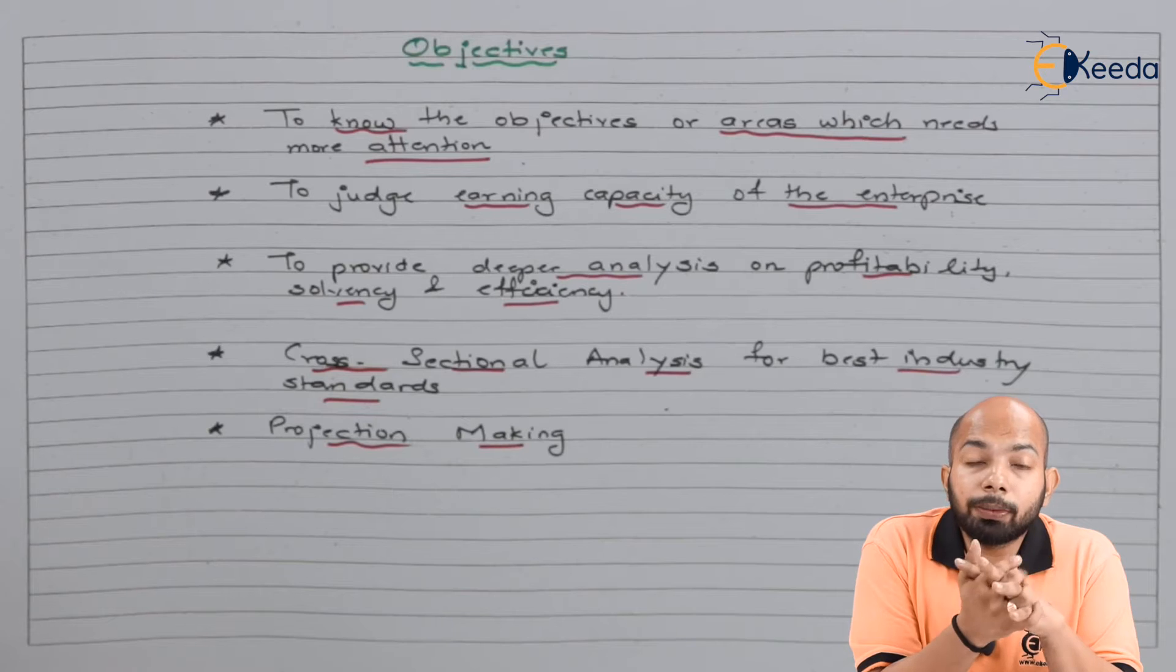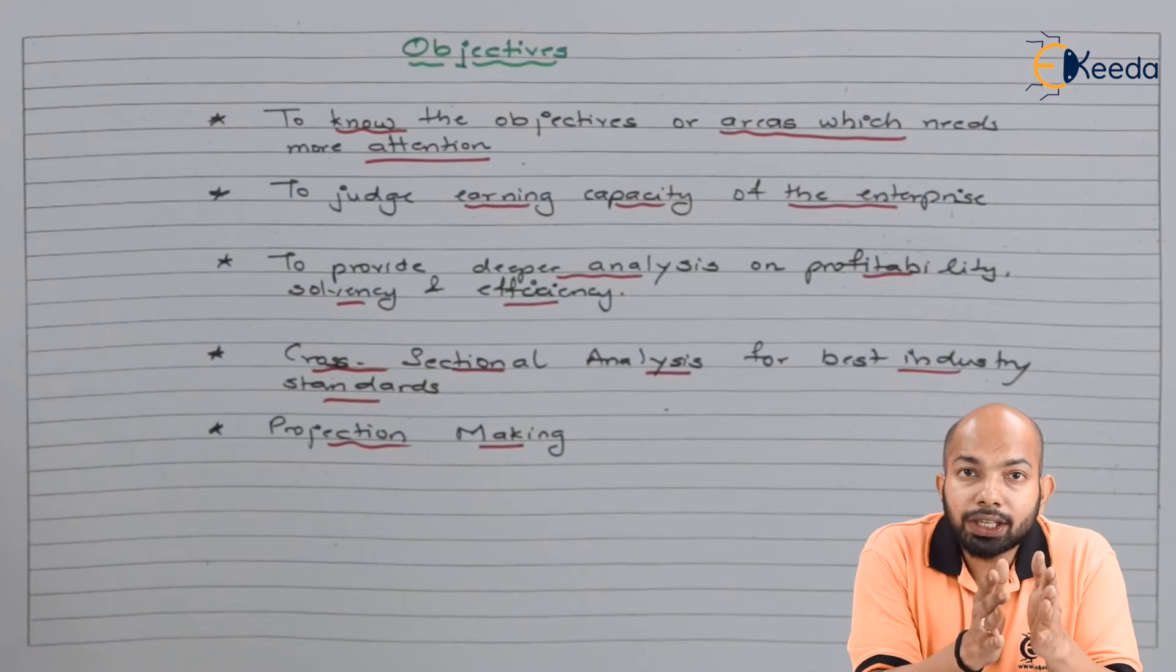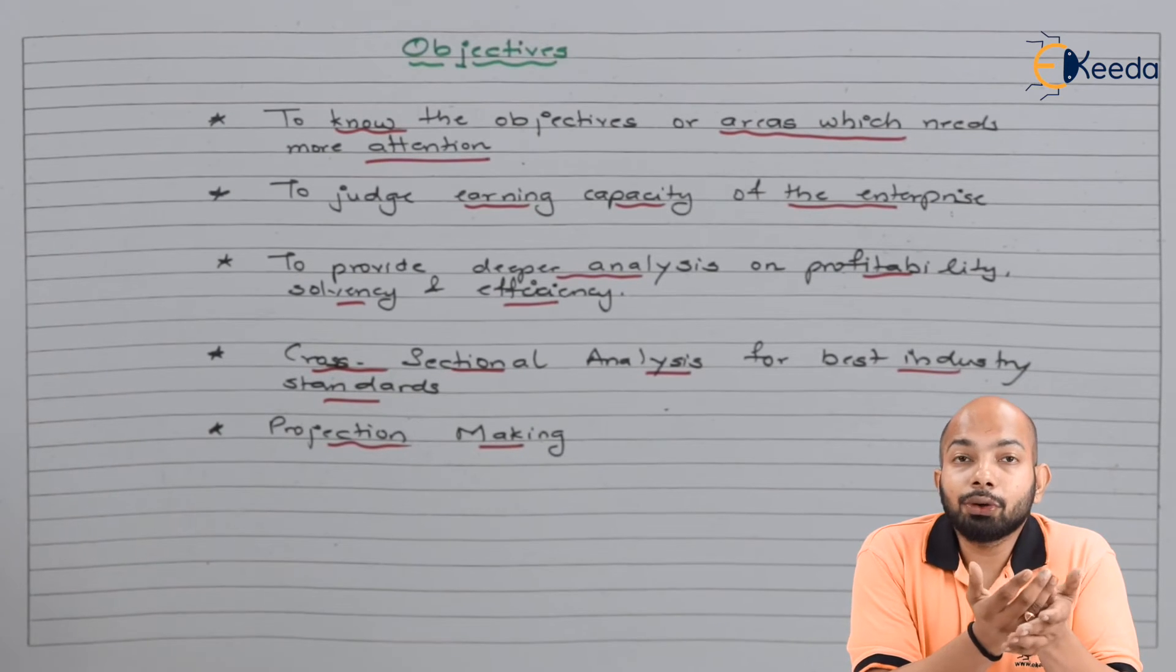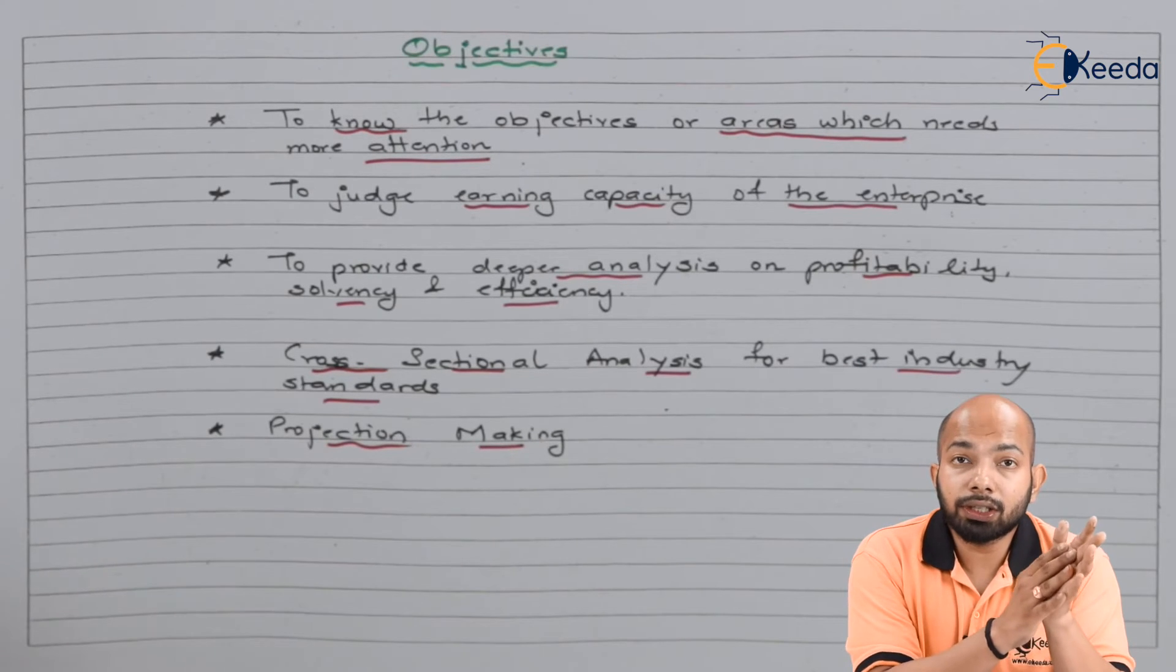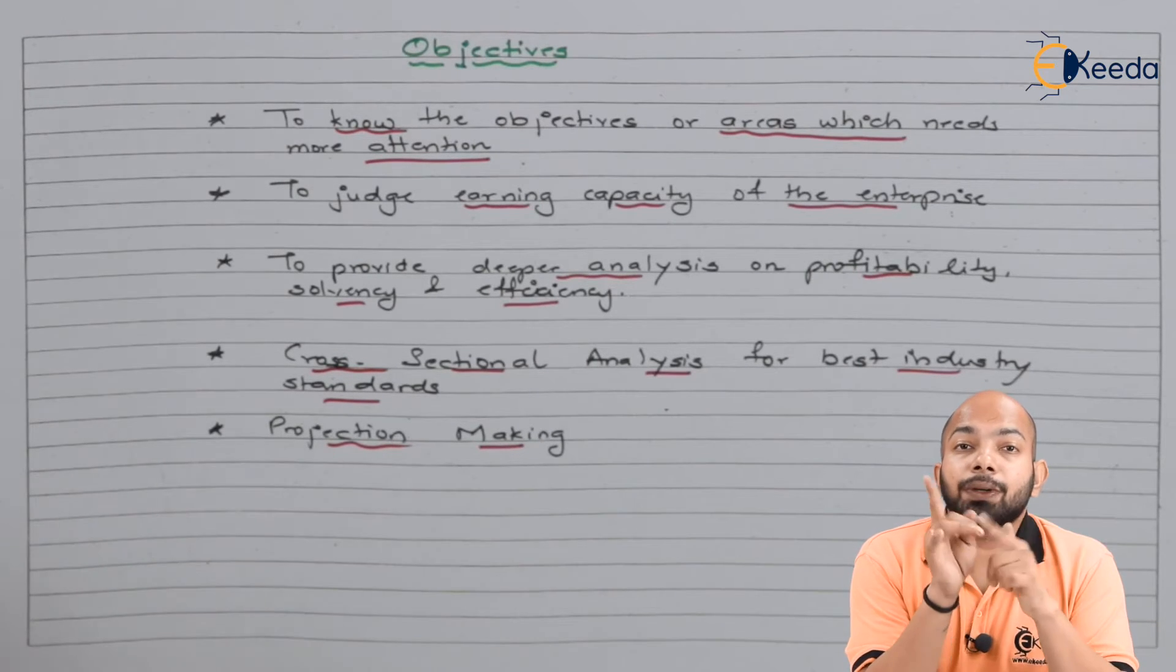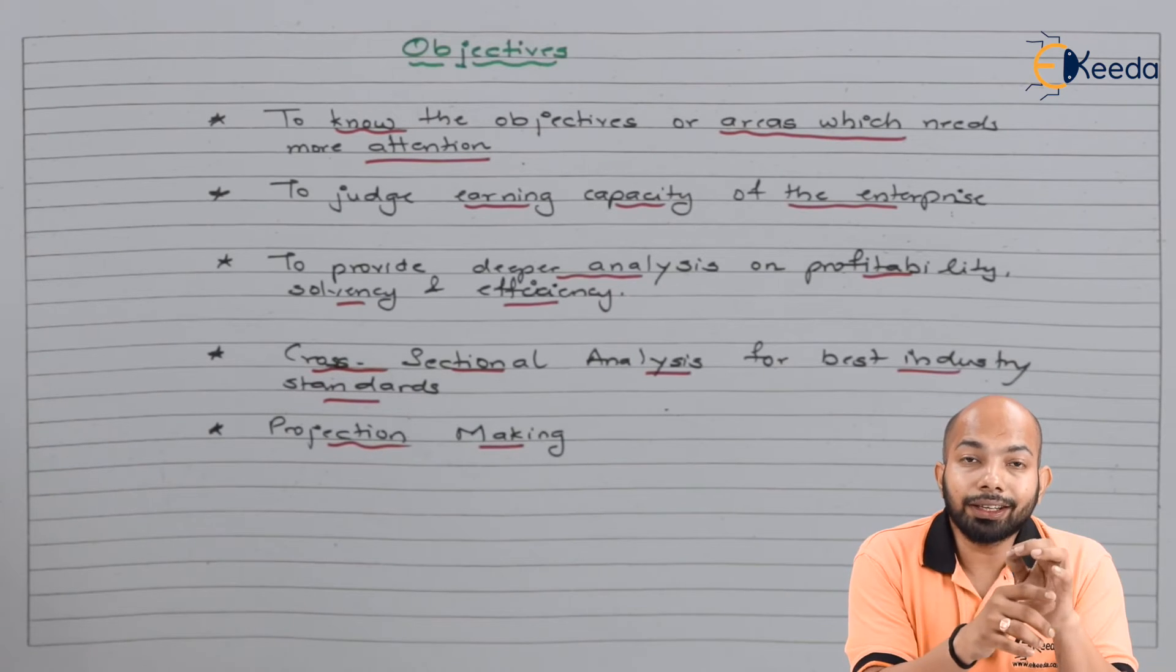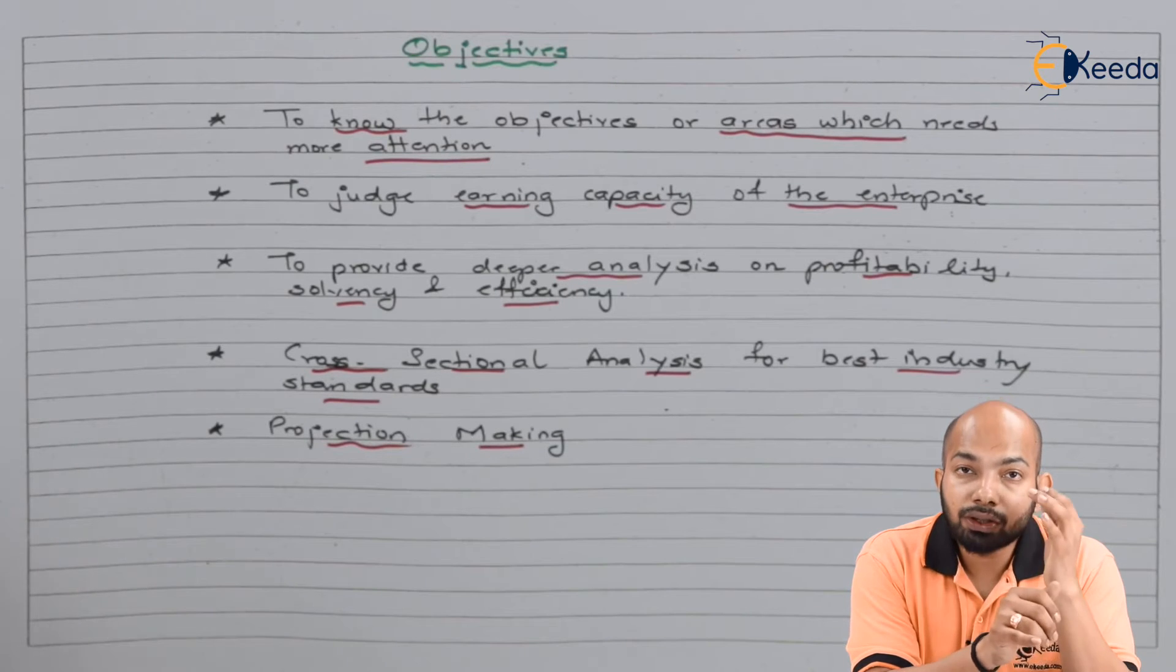The last part is projection making. You need to project where your company will stand in the next financial year, what target you're setting up depending on these ratios. Any previous ratios you have, based on that you'll set up a new ratio or rather a new target, a new percentage for yourself considering the previous performance.